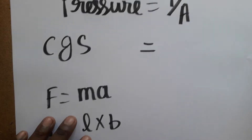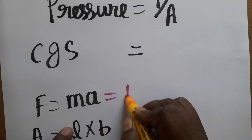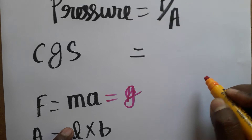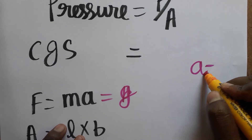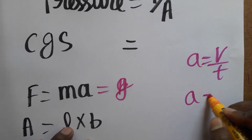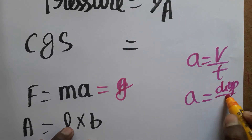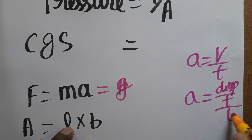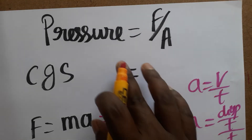In the CGS system, mass is in grams. Acceleration is equal to velocity divided by time, and velocity is displacement divided by time. I will be showing this on another page.